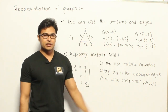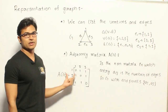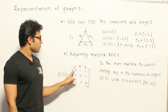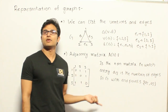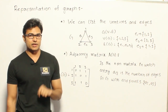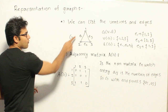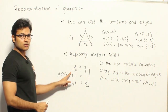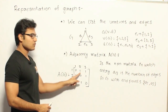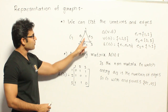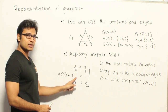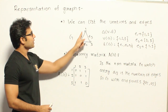Another way to represent a graph, especially in computers, is using the adjacency matrix. If you have N vertices you create an N×N matrix. If two vertices are adjacent you write 1 in the corresponding entry. For this 3-vertex graph, since 1 and 2 are adjacent, go to row 1, column 2 and write 1. Since 1 and 3 have an edge, write 1 at row 1, column 3. Similarly, entry (2,1) is 1 because there is an edge between 2 and 1.